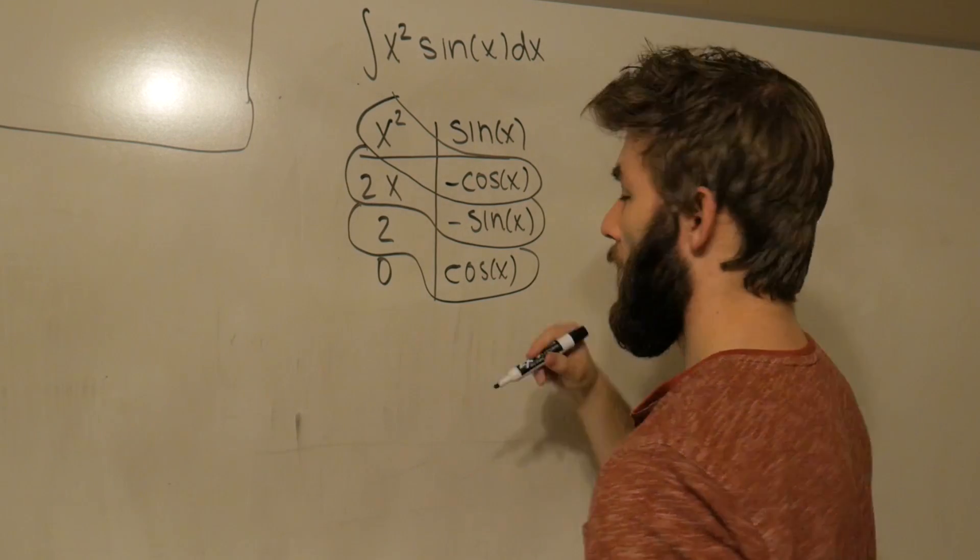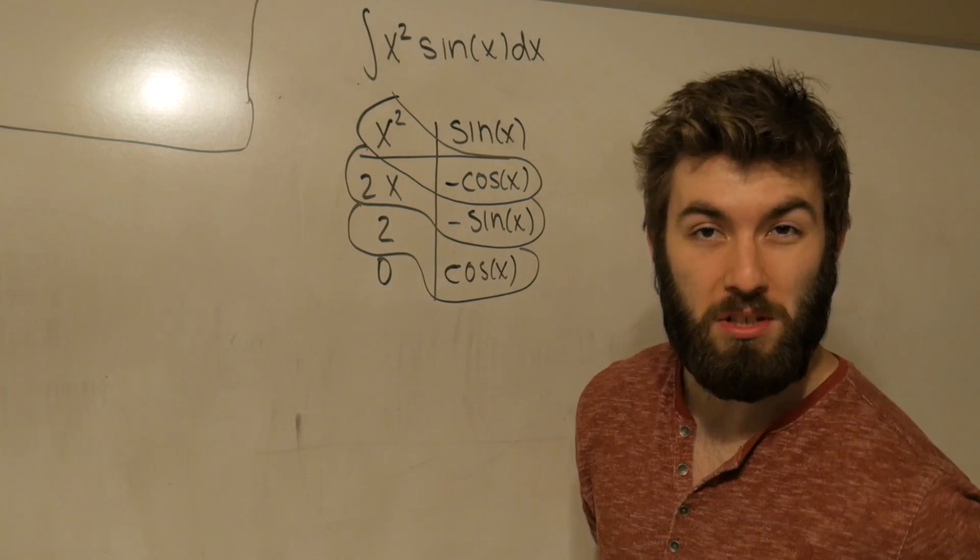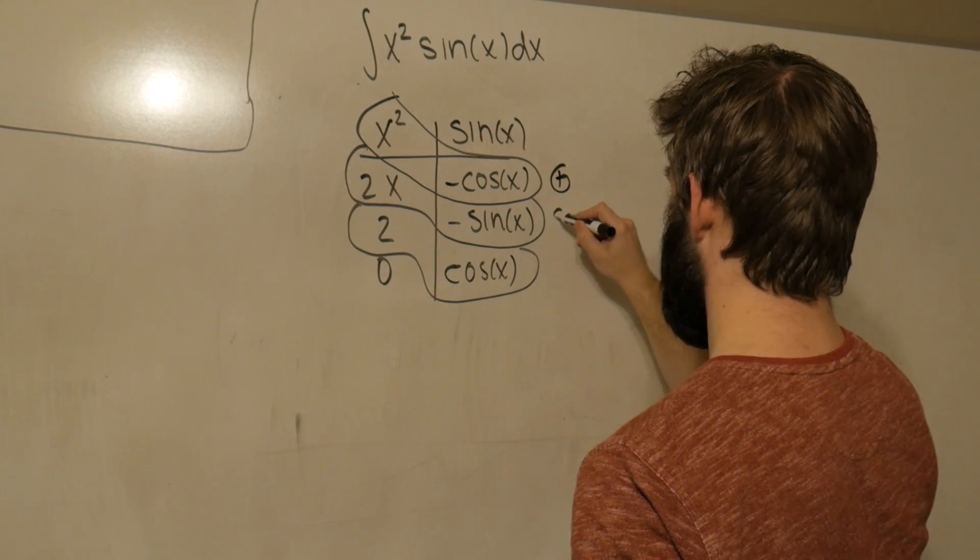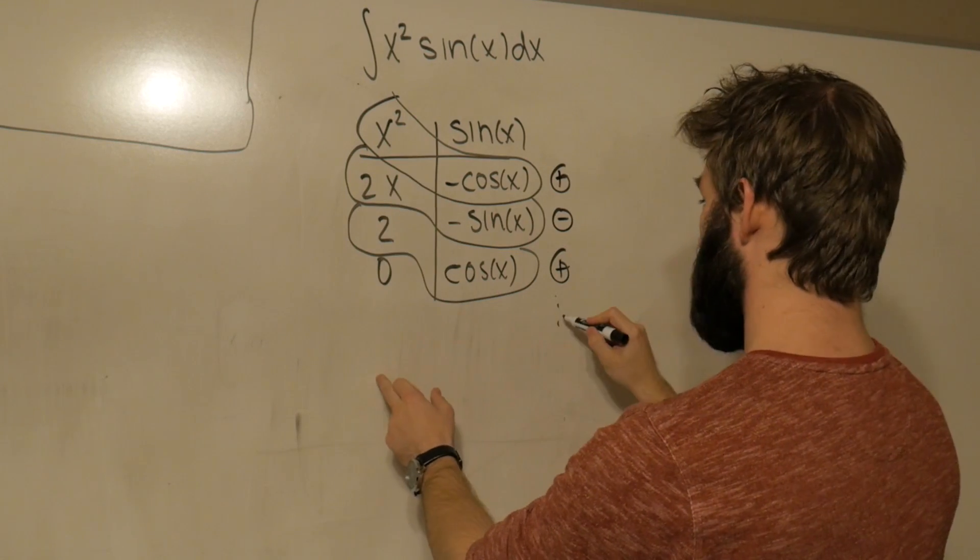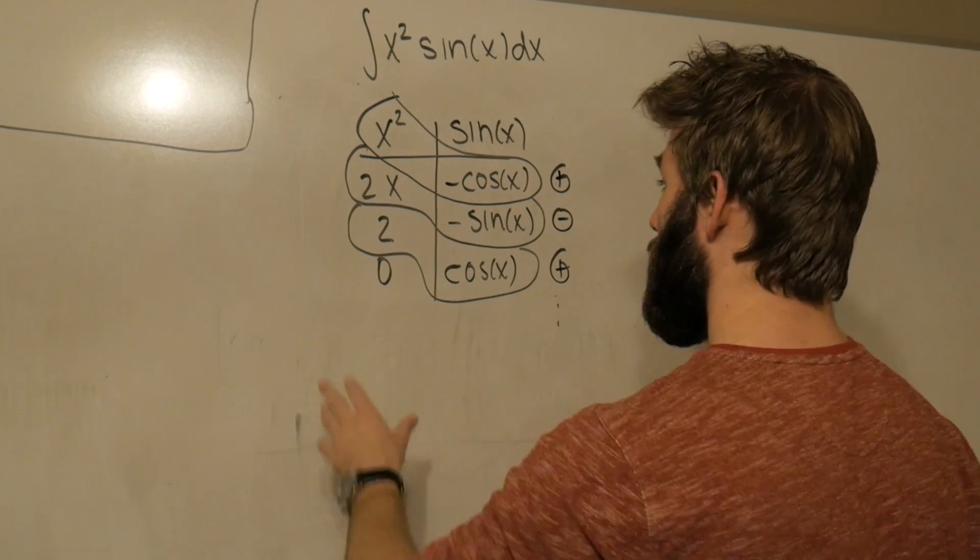And it's going to be the pattern—sort of the reason why this is sometimes called the tic-tac-toe method—is this is going to go plus, minus, plus, and so on. If this was an x³, it would keep going minus, plus, and so on. Okay.